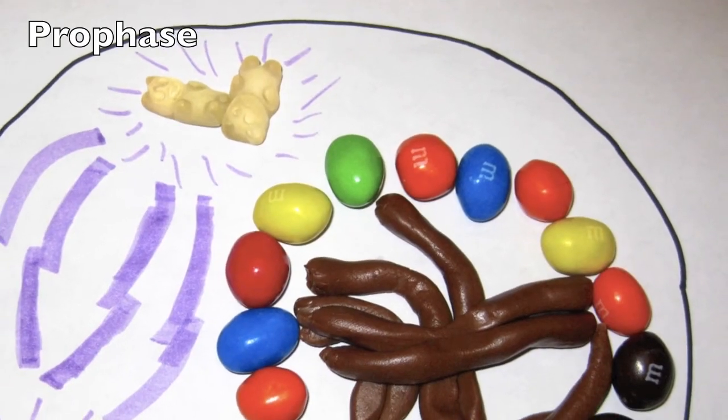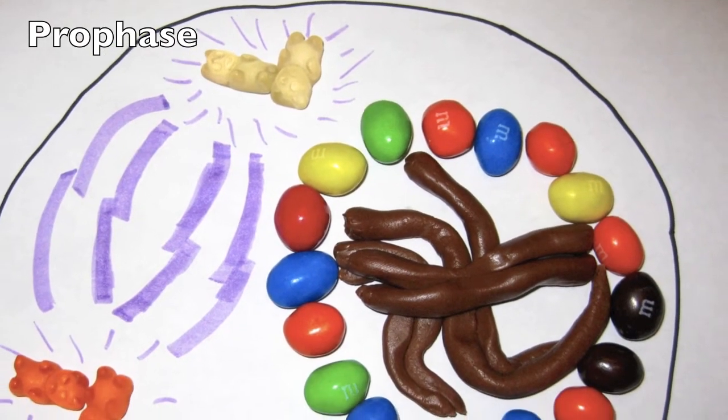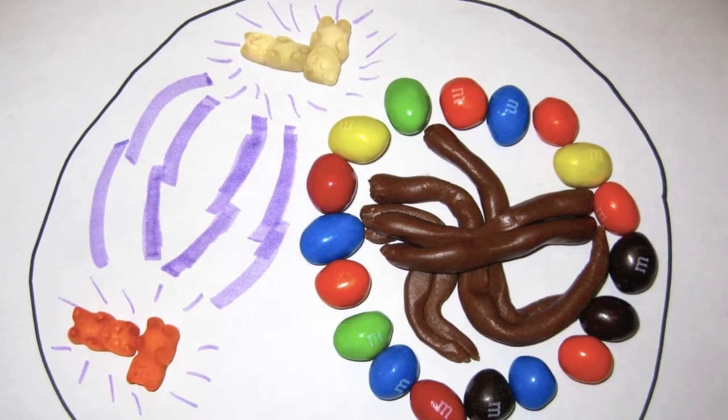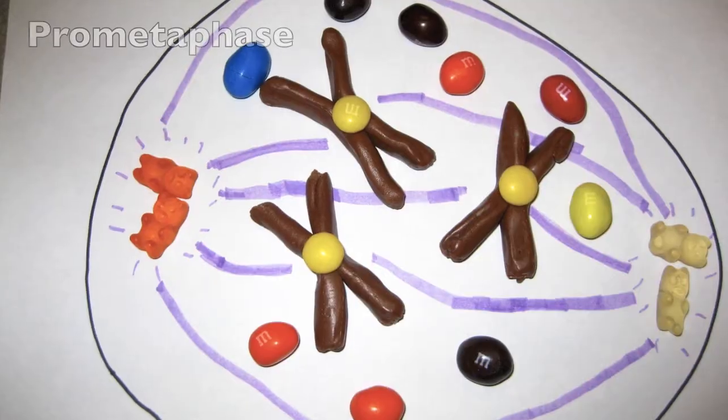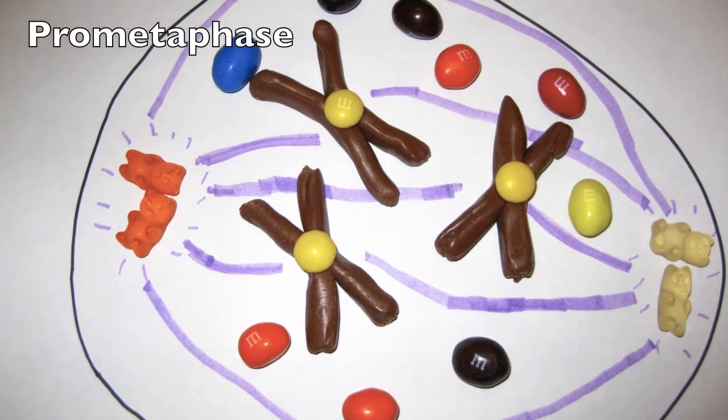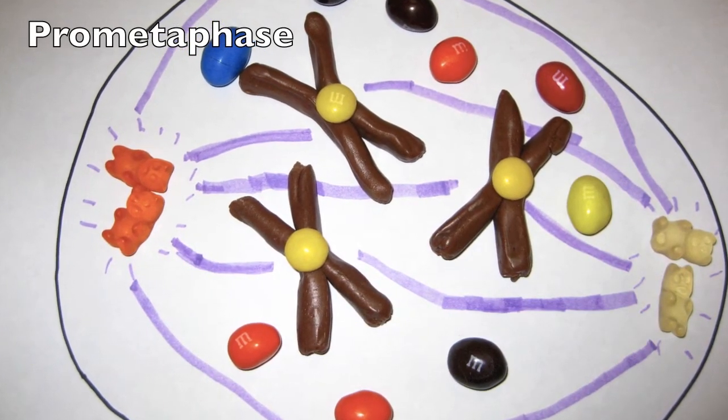In prophase, chromatin condenses into chromosomes joined at the centromeres. The mitotic spindle also forms. In pro-metaphase, microtubules extend and attach to the kinetochore of each chromosome.